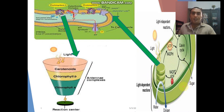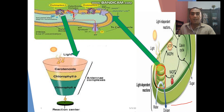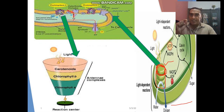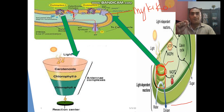Light reaction always occurs in the chloroplast — specifically at the grana. This is a single part of the grana, known as the thylakoid. This is the thylakoid membrane. Light reaction always occurs at this thylakoid membrane.